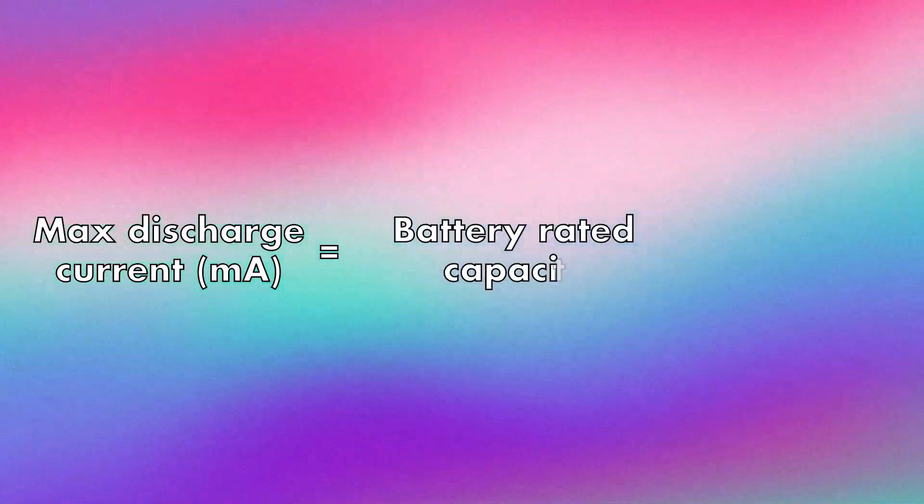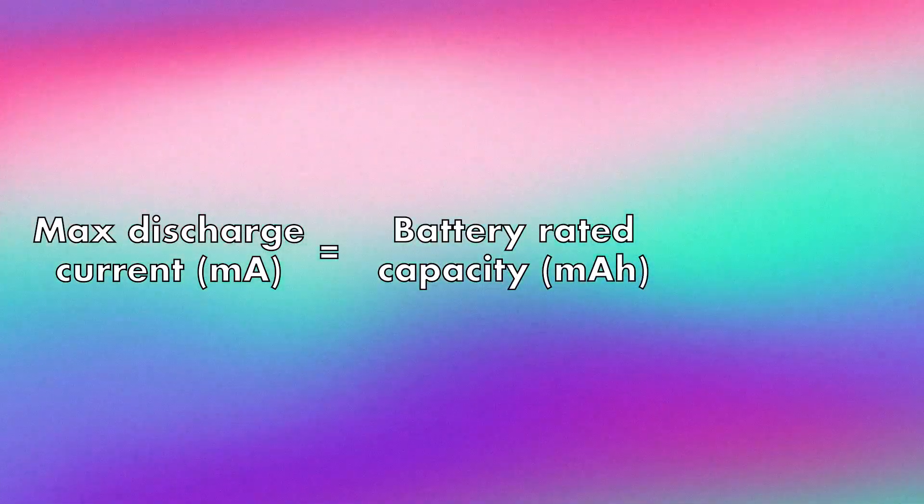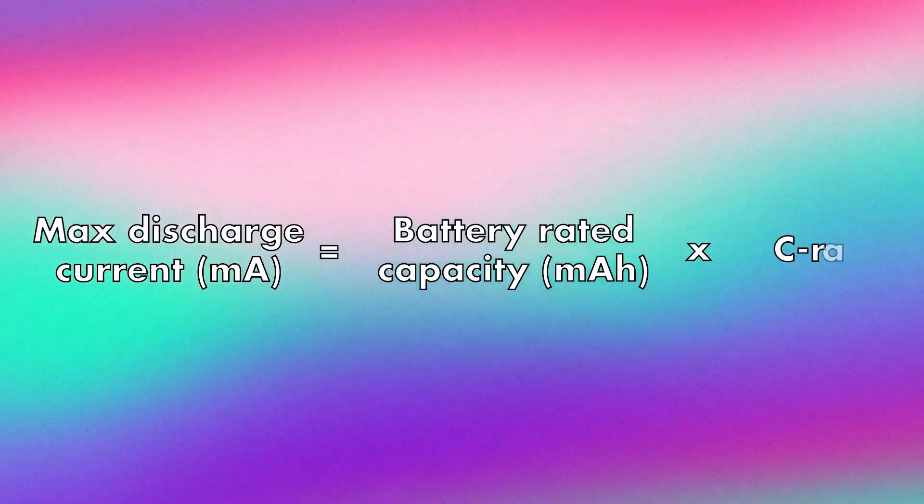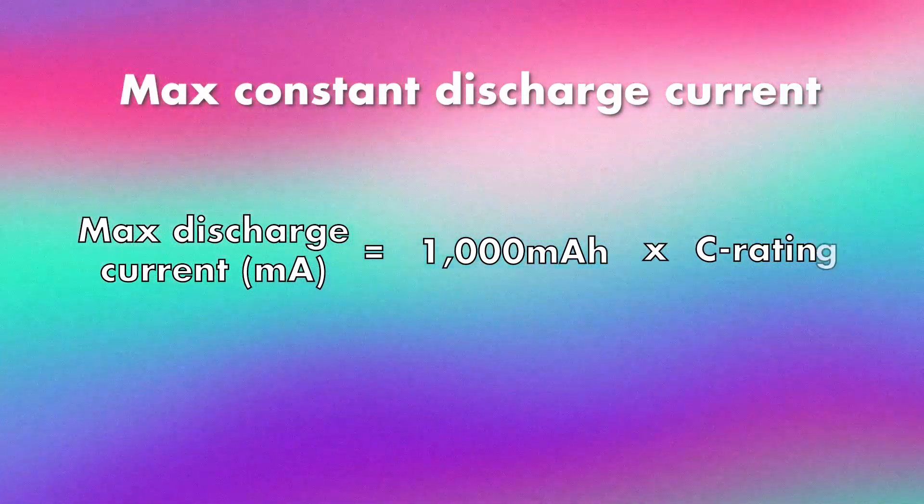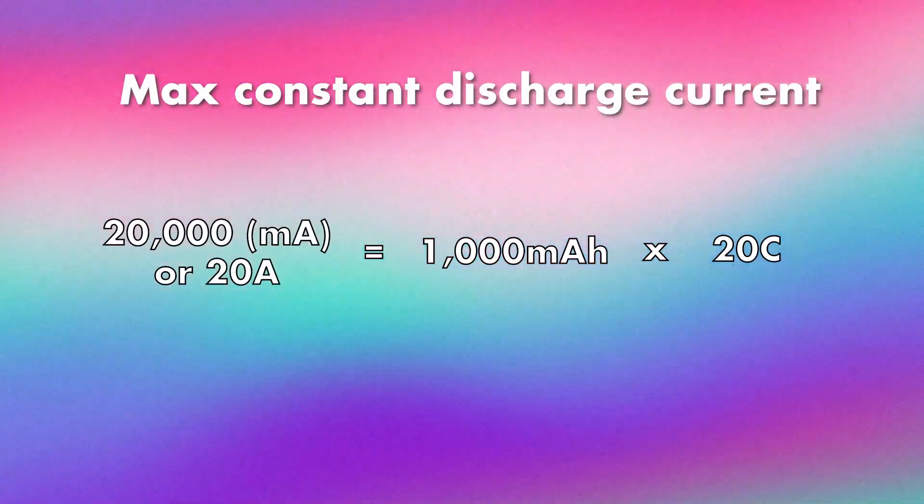Now let's learn how to calculate the charging and discharging currents using the C rating. The formula is simple: max discharge current equals the battery's capacity multiplied by the C rating — and you can usually find the capacity on the battery label. For example, this battery has a maximum discharge C rating of 20C and a capacity of 1000 mAh. So if we take 1000 mAh and multiply by 20C, we get 20A — the maximum discharge current the battery can deliver.